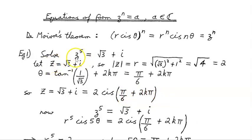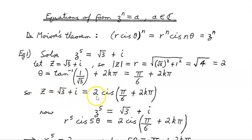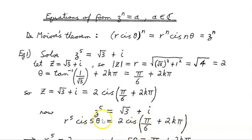Notice I've used capital Z here, not lowercase. The actual question is lowercase z to the power of 5 equals √3 + i. Capital Z equals √3 + i, which in polar form is 2 cis(π/6 + 2kπ). Now z to the power of 5, from de Moivre's theorem, is r to the power of 5 times cis(5θ). We've now equated these two sides.